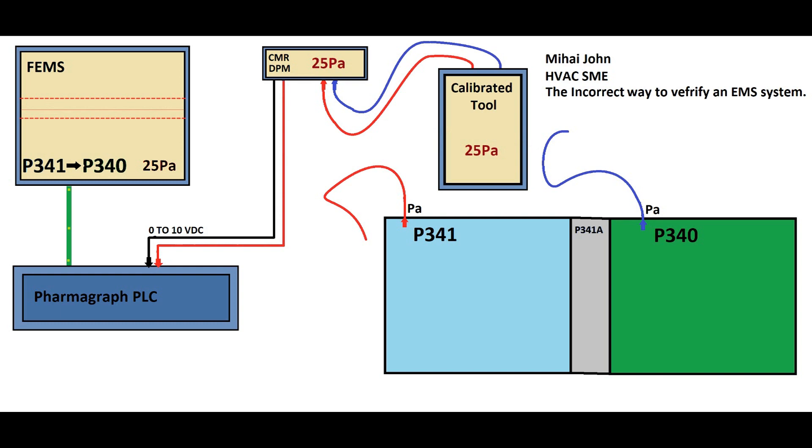Calibration specifically focuses on confirming the accuracy of the DPM and its data interpretation within the PharmaGraph software. The process involves aligning the displayed value of the front-end panel with those of the calibrated tool. This validation step ensures that the DPM accurately measures differential pressure and transmits correct data to the PharmaGraph software.